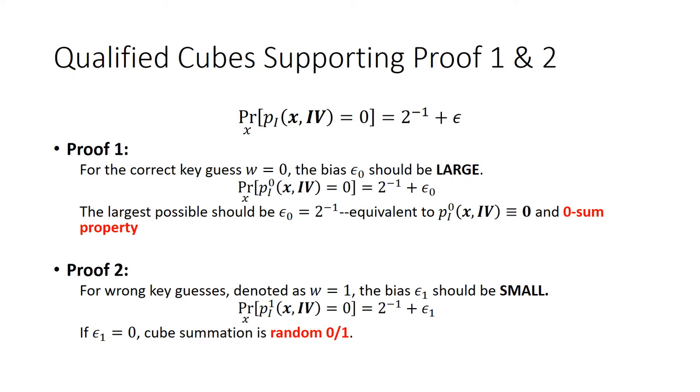The cubes used in dynamic cube attacks should be qualified with the two proofs of theoretically reliable key recovery attacks. More specifically, for the correct key guess, there is large bias epsilon 0. For the wrong guess, the bias epsilon 1 should be proved small. The largest possible epsilon 0 is 2 to the minus 1 when the superpoly Pi is constant 0. The smallest epsilon 1 should also be proved. If epsilon 1 equals 0, the cube summation is random.